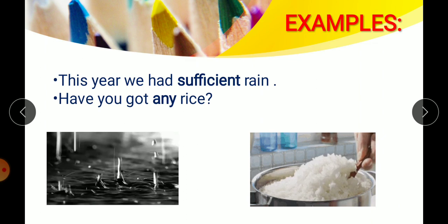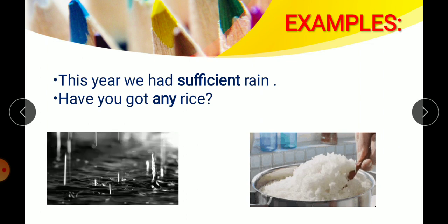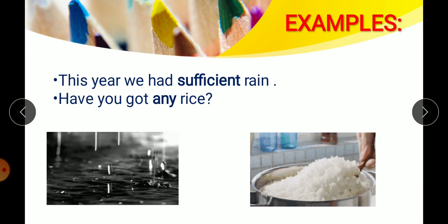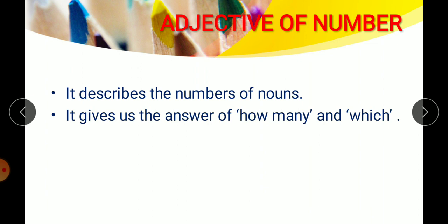Adjective of quantity tells you about how much that thing is. Now, adjective of number — it describes the number of a noun. How many. It gives us the answer of how many and which. How many means when we ask about how many toffees, how many chairs, how many people — the answer will come in the form of a number, like two people, three toffees, four chairs. That is adjective of number.